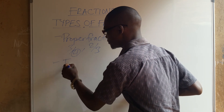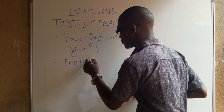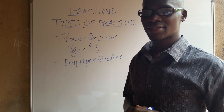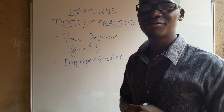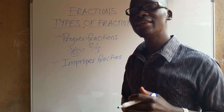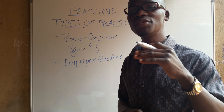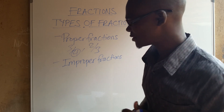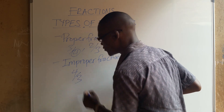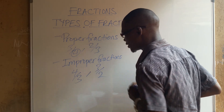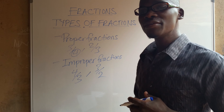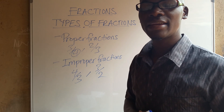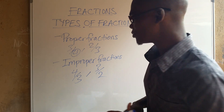The second type is the improper fraction. Improper fractions are the reverse of proper fractions. An improper fraction is a fraction whose numerator is greater than the denominator. For instance, 4/3 or 3/2. Whenever the numerator is greater than the denominator, that is an improper fraction.